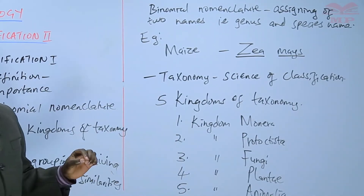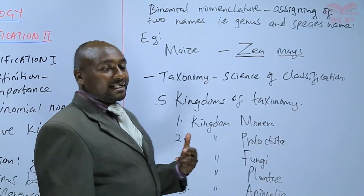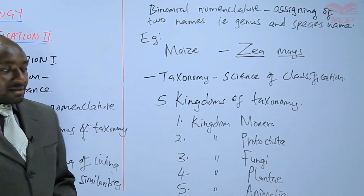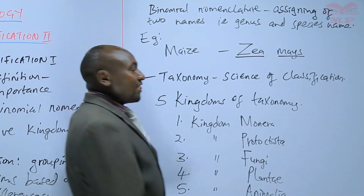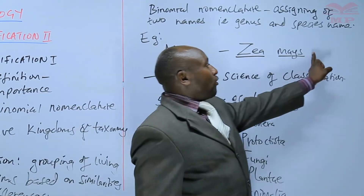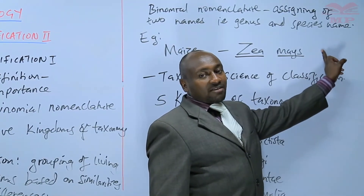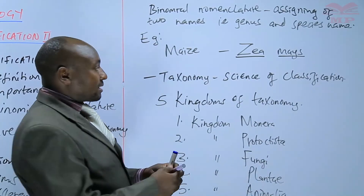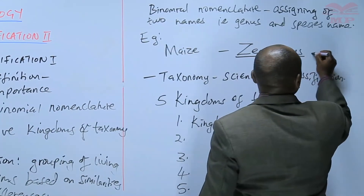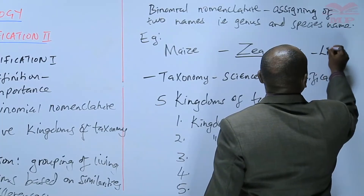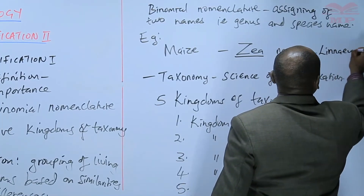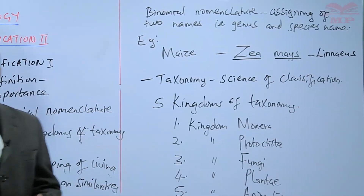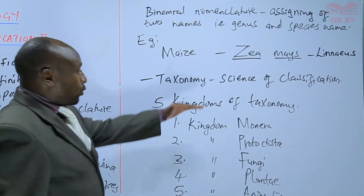Rule three: in case it is a newly discovered organism, sometimes it is accompanied with the name of the person who first discovered it. For example, we can have Zea mays Linnaeus — that is the person who first discovered maize, for instance.